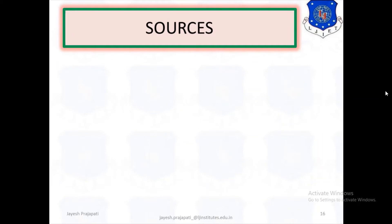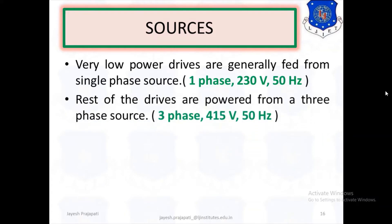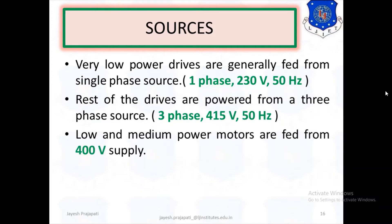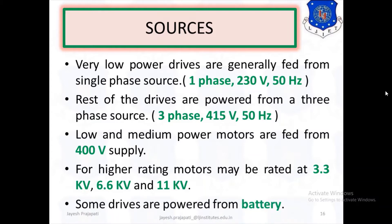The source may be AC supply or DC supply. AC supply can be single-phase or three-phase. Very low power drives are generally fed from single-phase sources at 230V, 50Hz. The rest of the drives are powered from three-phase sources at 415V, 50Hz. Low and medium power motors are fed from 400V supply, while higher rating motors may be rated at 3.3kV, 6.6kV, or 11kV.